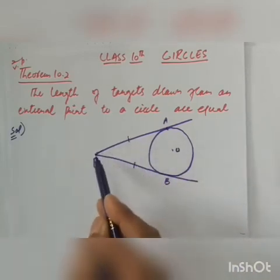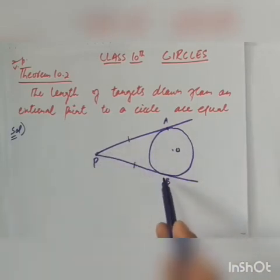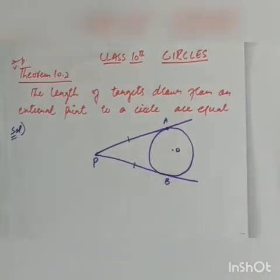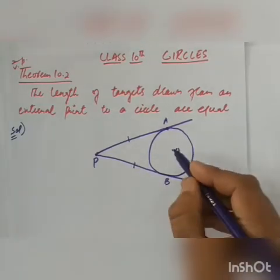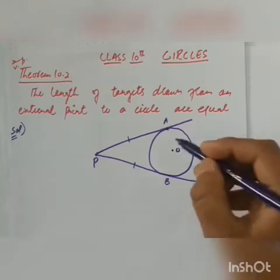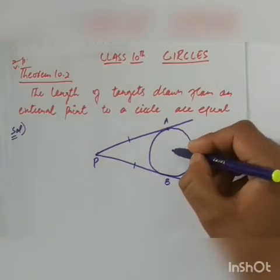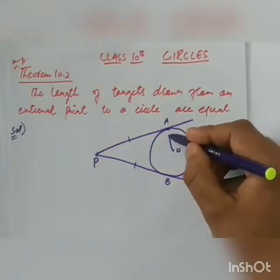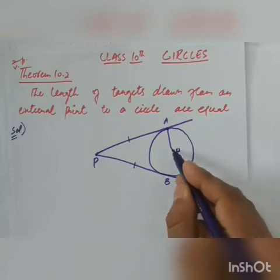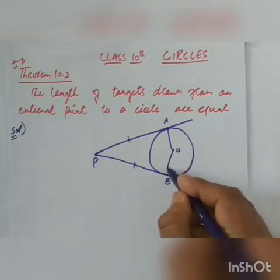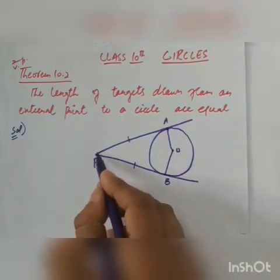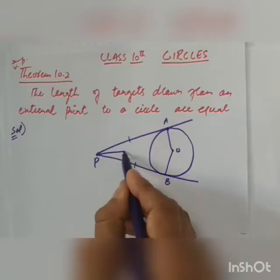We need to show that PA equals PB — these two tangents should be equal. For the construction, we join the center O to A, join O to B, and join O to P.